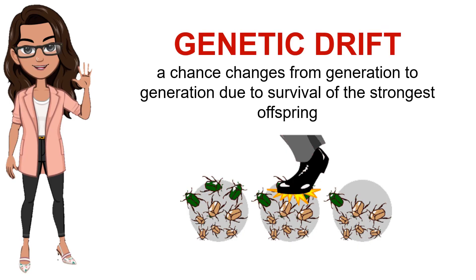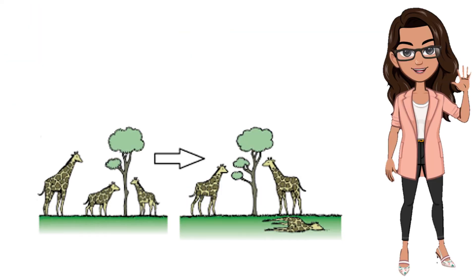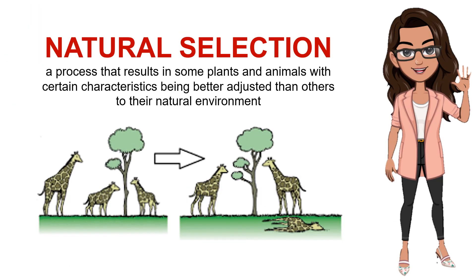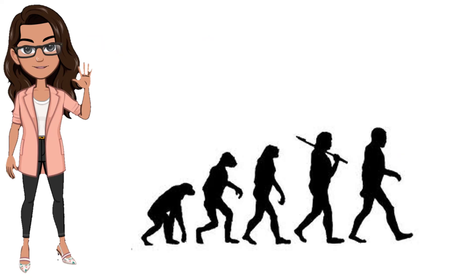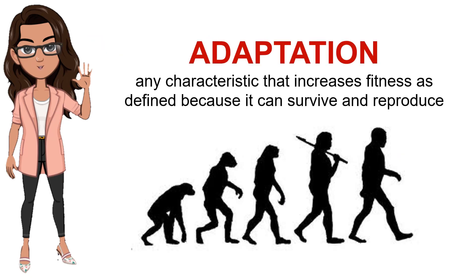Genetic drift refers to chance changes from generation to generation due to survival of the strongest offspring. Natural selection is a process that results in some plants and animals with certain characteristics being better adjusted than others to their natural environment. The last mechanism is adaptation — adaptation within a population leads to evolution by natural selection. Those animals and plants then have a higher chance to reproduce, survive, and increase their population more than the ones less adapted to their environment.